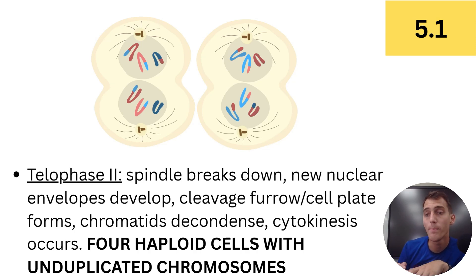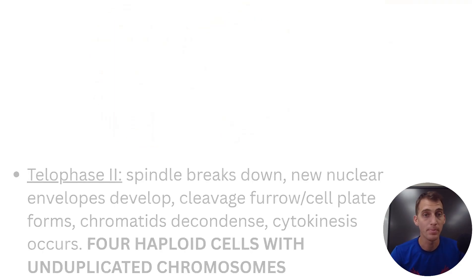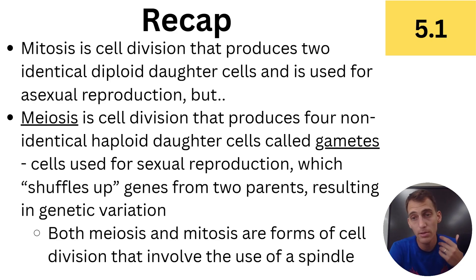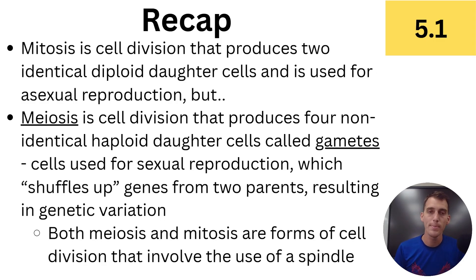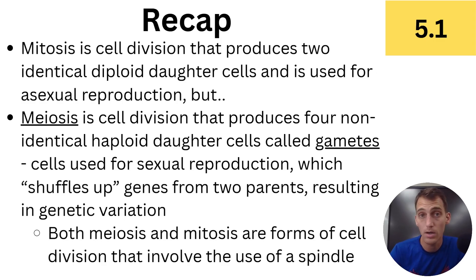Four haploid cells with unduplicated chromosomes are produced — that's the main goal. Those four haploid cells become sperm cells in biological males, and in biological females technically one egg cell forms while the other three become polar bodies. Importantly, these four cells are not genetically the same as each other — they have shuffled genes, none identical to one another. When one of those gametes combines with another person's gamete, you get a random combination of parental genes.